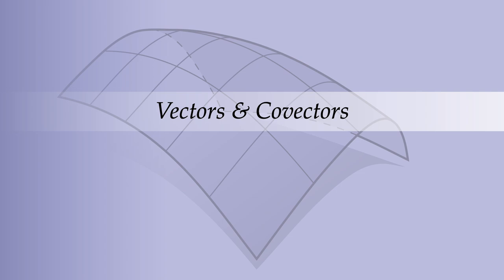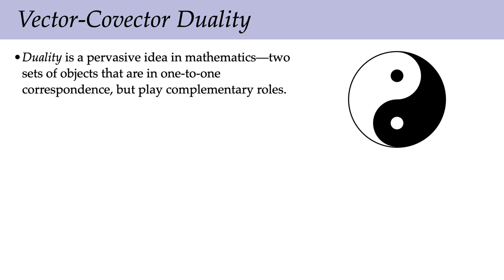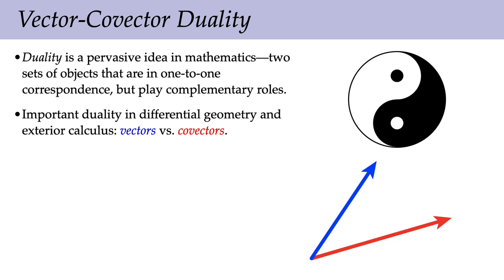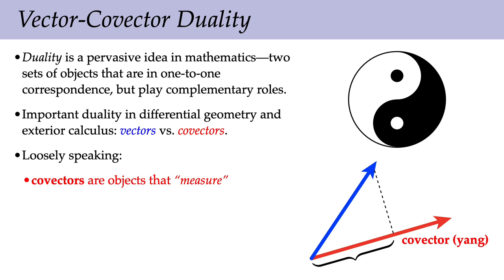Let's start out in one dimension by talking about vectors and co-vectors. There's a duality between vectors and co-vectors — duality is a pervasive idea in mathematics and philosophy: you have two sets of objects that are in correspondence but play complementary roles, sort of the yin and the yang. The really basic important idea is that co-vectors should be thought of as objects that do measurement — they're like your ruler — whereas vectors are objects that get measured, the length you're measuring with your ruler.